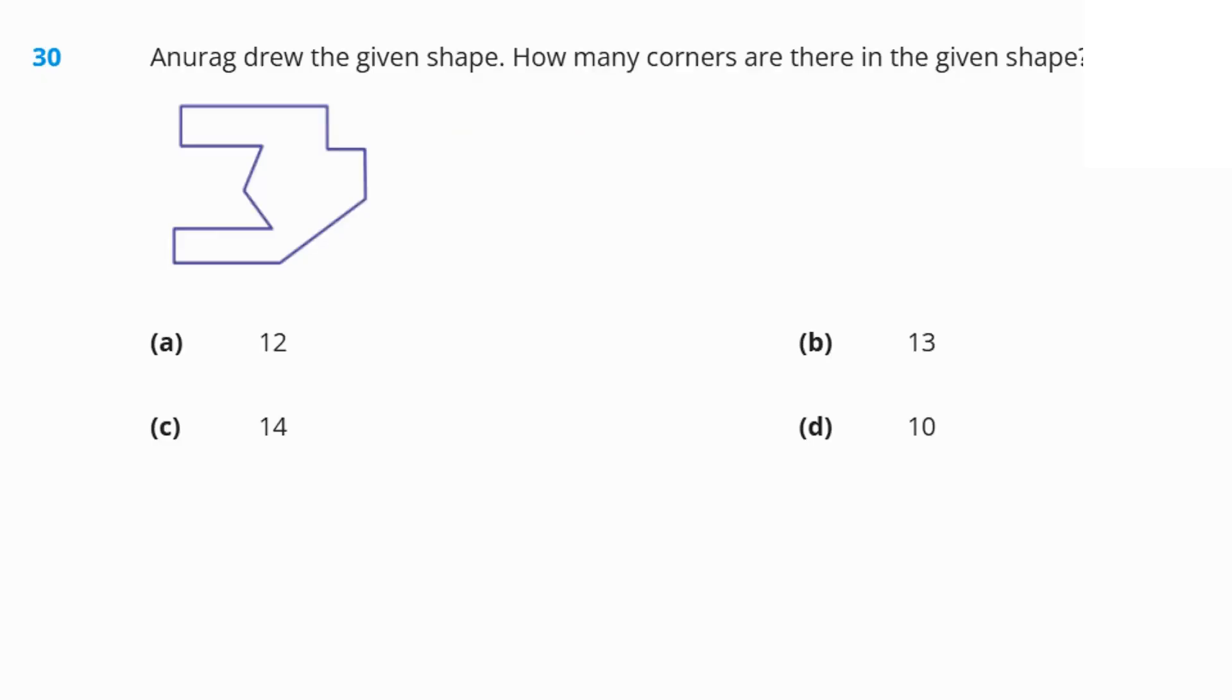Next, question number 30. Anurag drew the given shape. How many corners are there in the given shape? Let's count the corners. 1, 2, 3, 4, 5, 6, 7, 8, 9, 10, 11, and 12. 12 edges or corners. That's 12 option A as the answer.